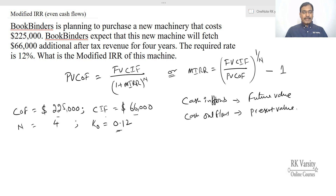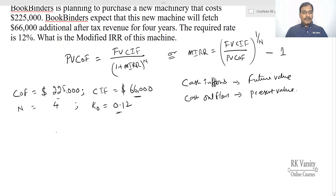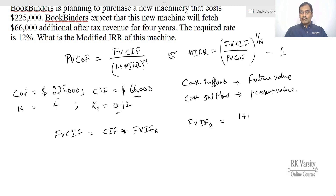Now you need to calculate the future value of cash inflows. Since you are receiving even cash flows for 4 years, you use the annuity function: cash inflow times the future value interest factor annuity (FVIFA). The FVIFA formula is: [(1 + i)^n / i] minus [1/i].